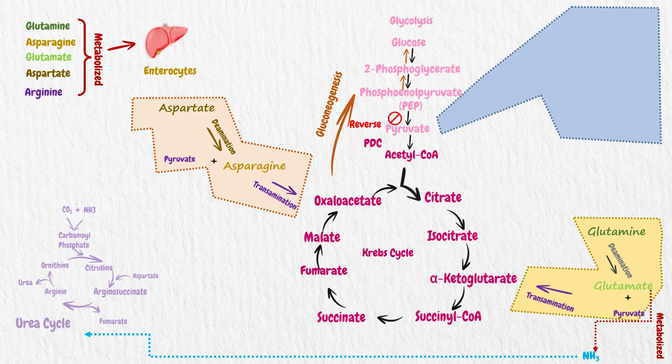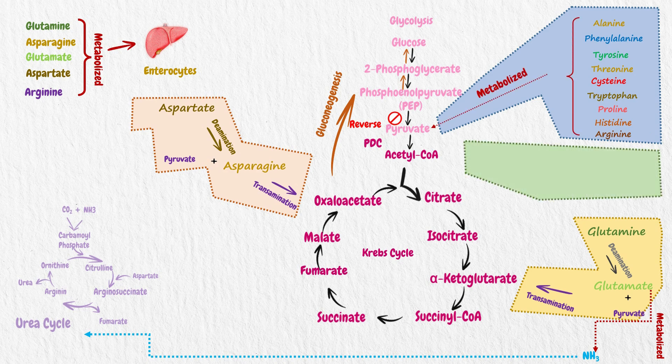The carbon skeletons derived from alanine, phenylalanine, tyrosine, threonine, cysteine, tryptophan, proline, histidine, and arginine are metabolized eventually to pyruvate. And amino acids such as threonine, lysine, and tryptophan are metabolized to acetyl coenzyme A.